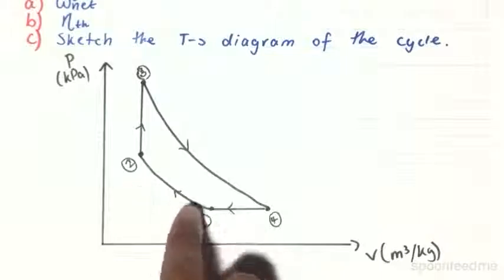Just to refresh our memories, the Atkinson cycle is as follows. There's an isentropic compression from process 1 to 2, and since it's an isentropic compression, there is some work put into the system.